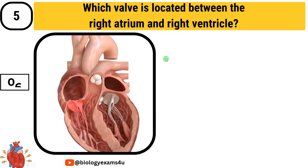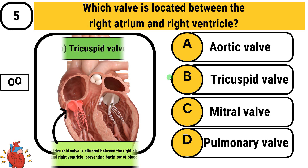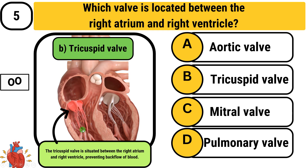Question number 5: Which valve is located between the right atrium and right ventricle? Option A: aortic valve. Option B: tricuspid valve. Option C: mitral valve. Option D: pulmonary valve. The answer is tricuspid valve. The tricuspid valve is situated between the right atrium and right ventricle and prevents backflow of blood from the right ventricle to the right atrium.